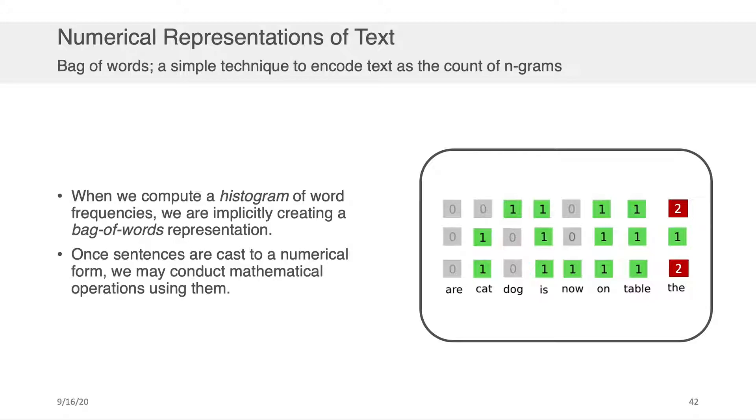Now, what's useful is that once we have the sentences or a set of sentences cast to a numerical form, such as shown there on the right-hand side, we can now conduct mathematical operations on them. You could, for example, take the average of the second column there to get the average of cat. Or you could even take an average across all three sentences to figure out the statistical properties of the average sentence in a corpus.